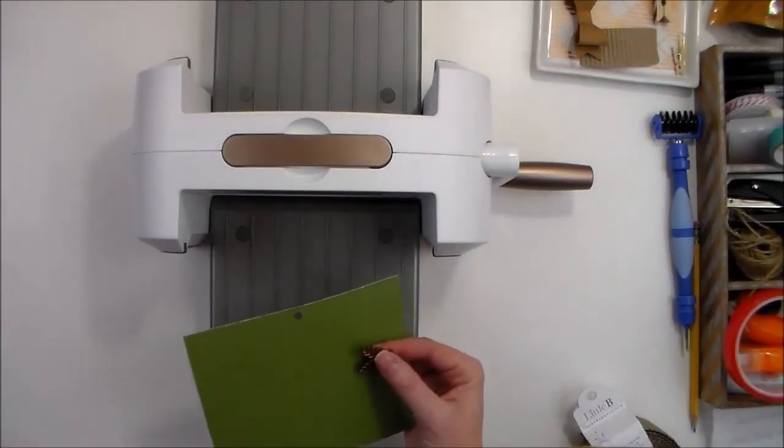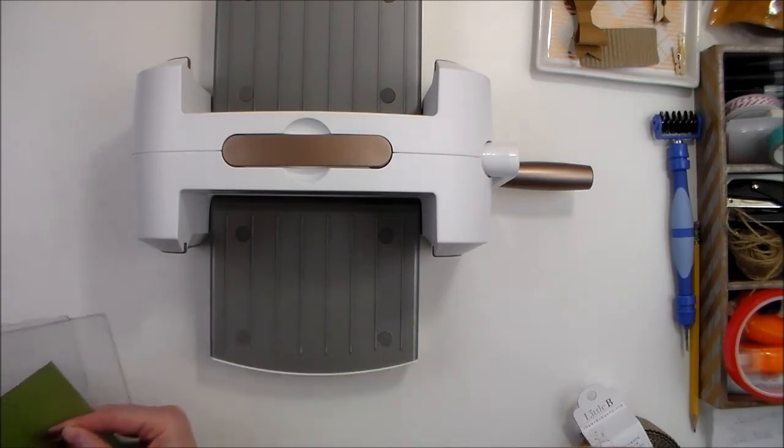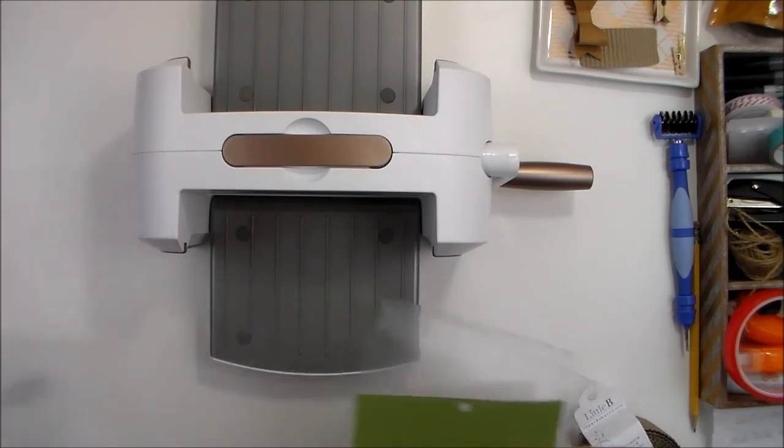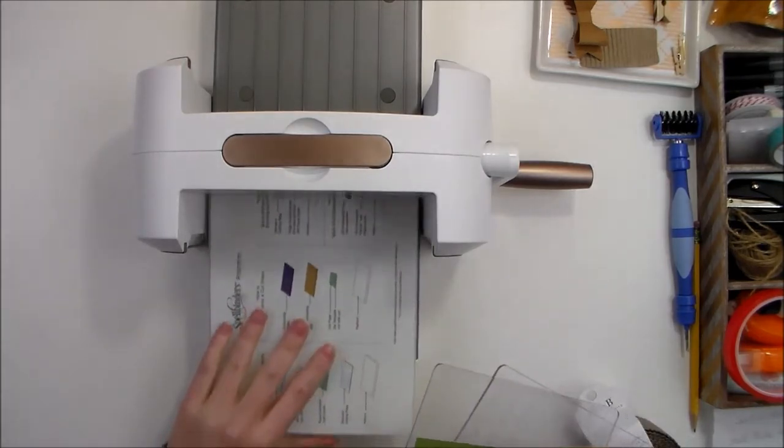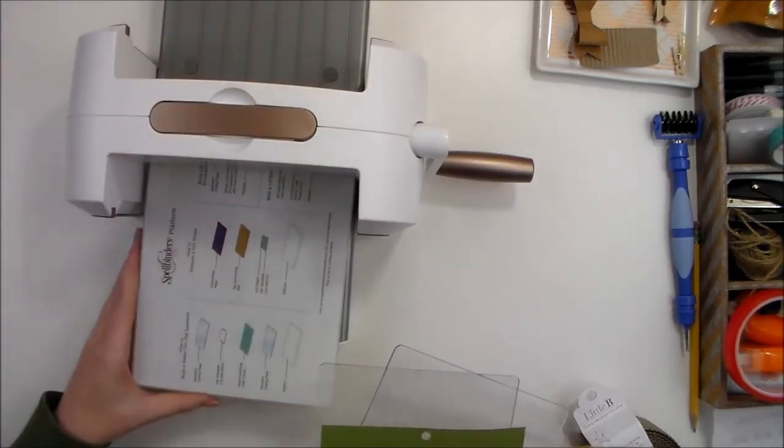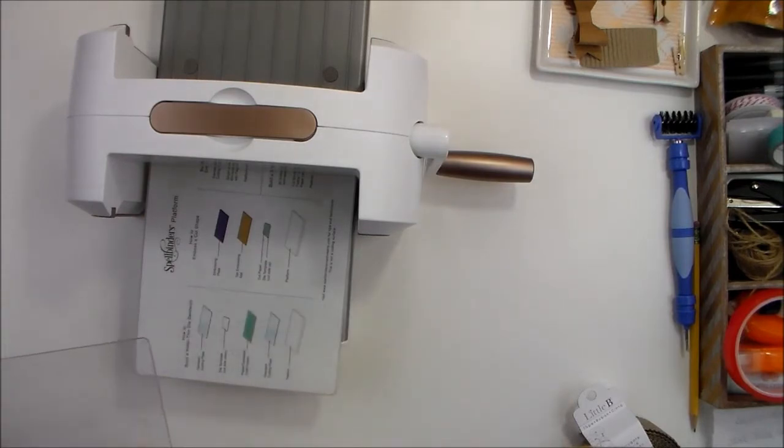Okay, and this is an etched die. So not only is it going to cut, but it's going to emboss as well. And so what we'll need here for this one, and it shows you right here on the base plate, on the platform, the kind of sandwich that you'll need. So it says we need a standard cutting plate.